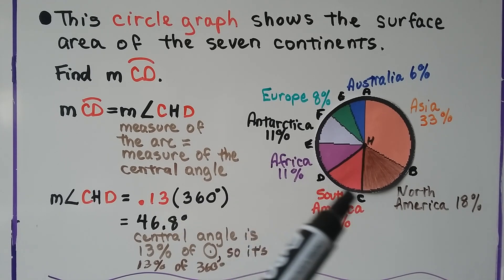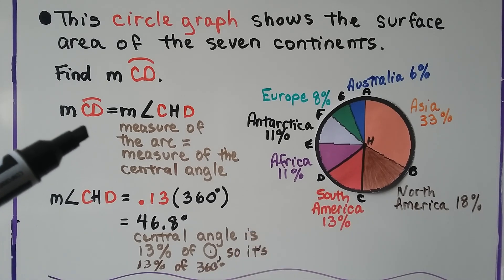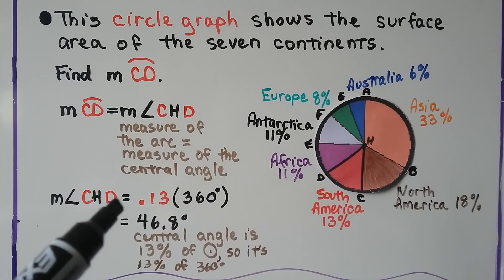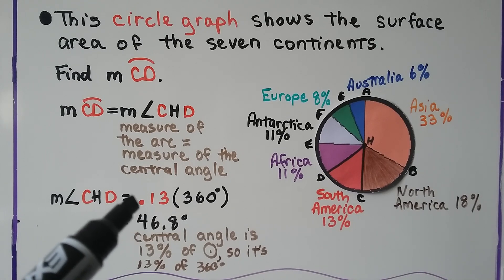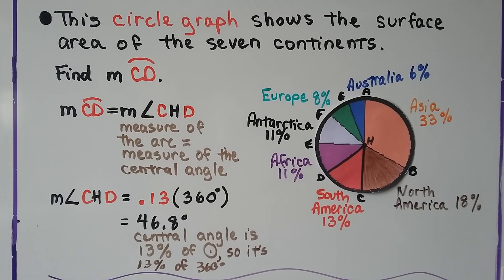So we need to find this arc right here, CD, where South America is 13 percent. The measure of arc CD is equal to the measure of that central angle. The measure of angle CHD is equal to 13 hundredths, .13 times 360 degrees of a circle. It gives us 46.8 degrees. The central angle is 13 percent of the circle, so it's 13 percent of 360 degrees.